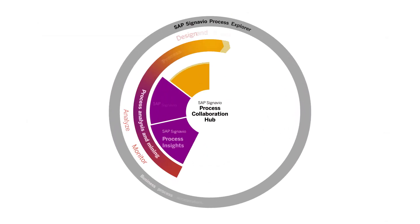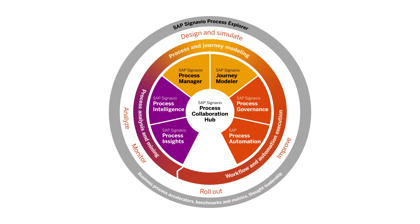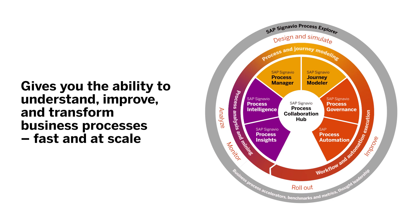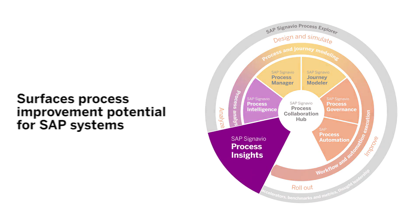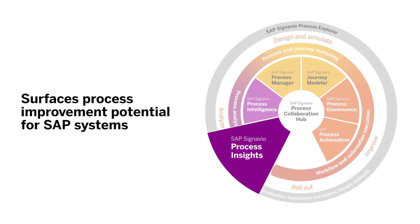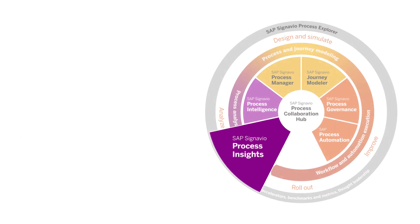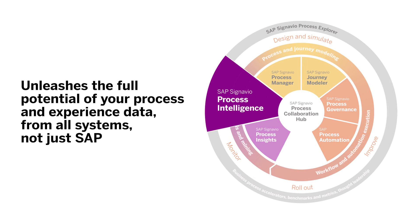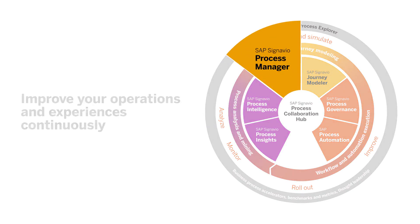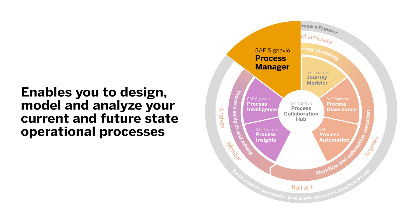So how does it all fit together? SAP Signavio Process Transformation Suite gives you the ability to understand, improve, and transform your business fast and at scale. SAP Signavio Process Insights surfaces process improvement potential for SAP ERP systems and SAP S/4HANA systems, offering same-day out-of-the-box insights, improvement recommendations, and industry benchmarks so that you can optimize your process performance. SAP Signavio Process Intelligence then unleashes the full potential of your process and experience data from all systems — not just SAP — to improve your operations and experiences continuously. SAP Signavio Process Manager then enables you to take this insight and design, model, and analyze your current and future state of operational processes.